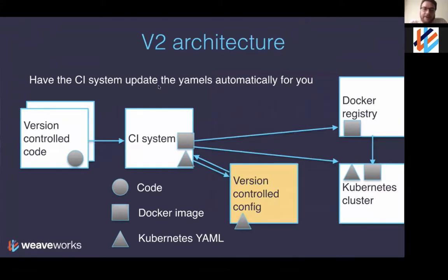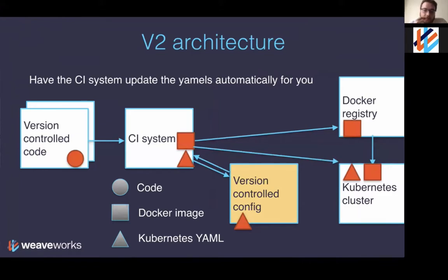If we want to update the V1 architecture to have this centralized config repo as a source of truth, it's possible to do it this way — the V2 option. You make the CI system do the work: when there's a code change resulting in a new container image, the CI system builds and pushes the image to the registry, then additionally checks out the config repo, modifies it, pushes it back to the config repo, and then pushes that config to the Kubernetes cluster, which downloads the Docker image from the registry.